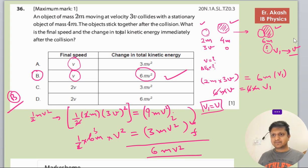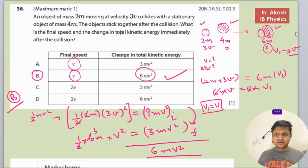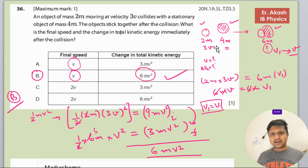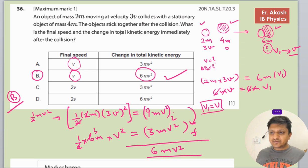We will check the mark scheme — the mark scheme says B is the right answer. So in this question, we first calculated velocity using conservation of momentum, then calculated and subtracted the kinetic energies. Thank you for watching this video. If you have any doubts, please put your queries in the comment section.